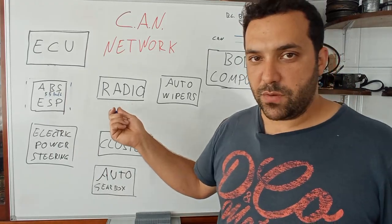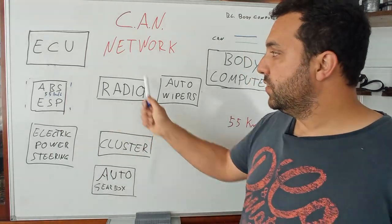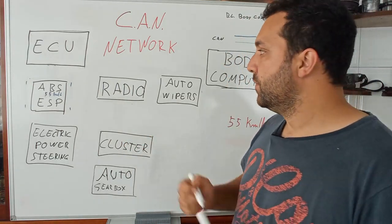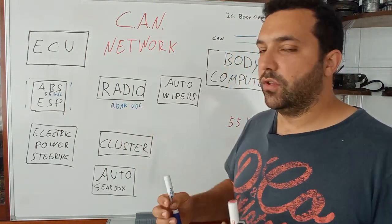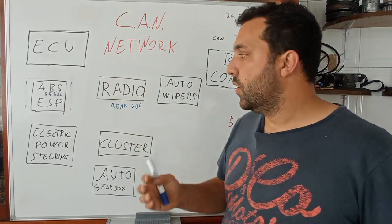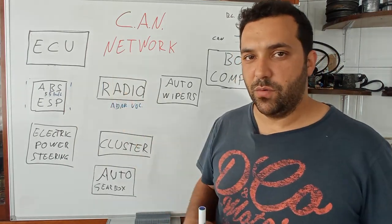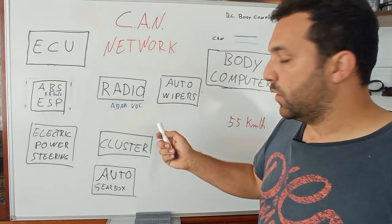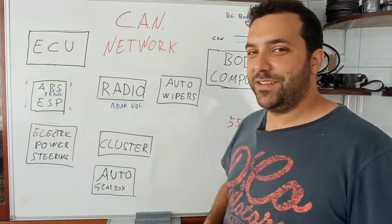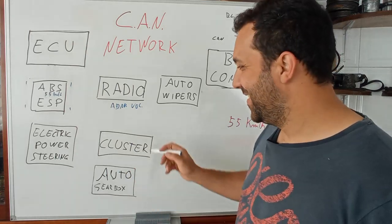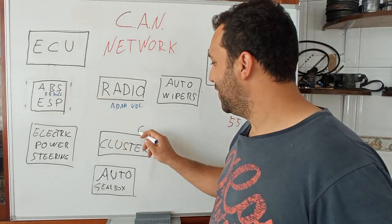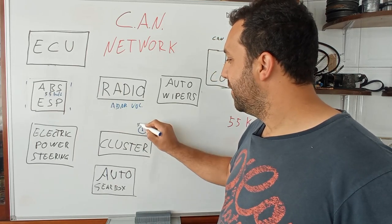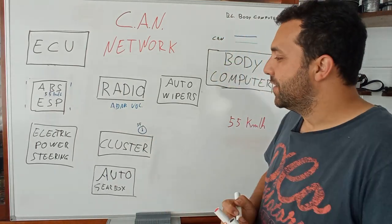On the radio, the stereo, the head unit — you also want to know the speed because if you have adaptive volume you want a lower or higher volume as you go faster or slower. You can also turn this function off or on. On the cluster you want to know the speed of the car obviously, so you have your cluster showing 55 kilometers an hour.